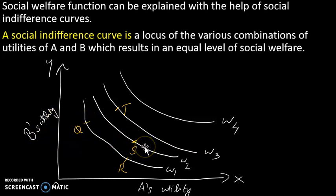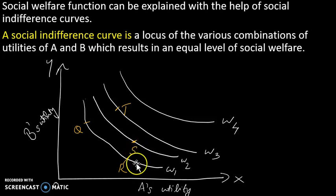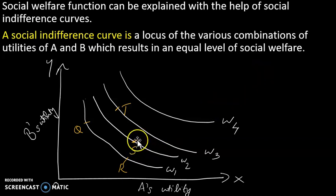How does social welfare increase? That is the Kaldor-Hicks principle — one way to compensate the loss so that the other gains, resulting in a social welfare increase and total utility increase. If one can compensate the loss, social welfare increases. This higher welfare level is called W3.